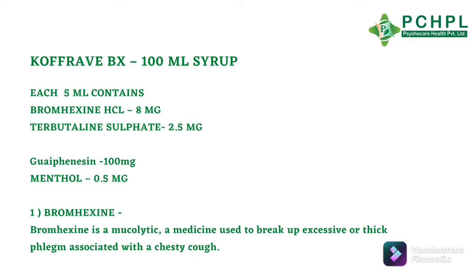Firstly, we have bromhexine hydrochloride. It acts as a mucolytic agent. It helps to break down mucus so that it will easily expel out. Secondly, we have terbutaline sulfate, which acts as a bronchodilator. The bronchial smooth muscles are relaxed so that breathing difficulties will not come and breathing is made easy.